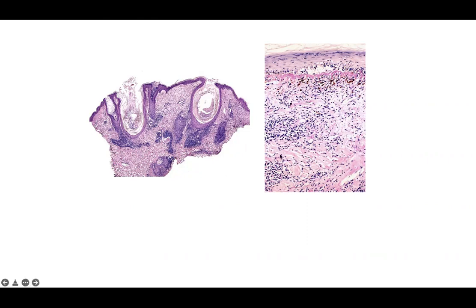On the left you see a superficial and mid peri-adnexal lymphocytic infiltrate, follicular plugging, maybe an atrophic epidermis, a little high compact hyperorthokeratosis. On the right you see a lymphocytic interface dermatitis. You might see widened spaces in between the collagen — this could represent increased mucin in between collagen bundles.